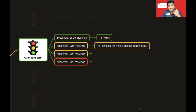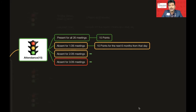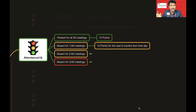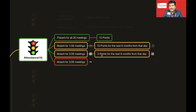For example, if you take one absence in June, you will lose full Attendance points from June through November — for six months. From December onwards, if you have no further absences, you will get full points again. But if there is any further absence, you will lose points for the next six months from that point.